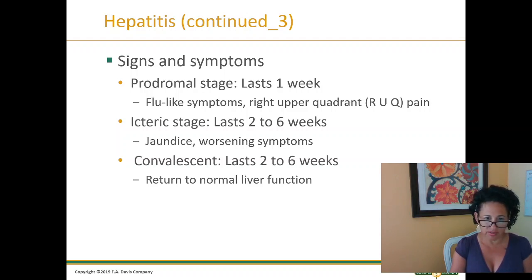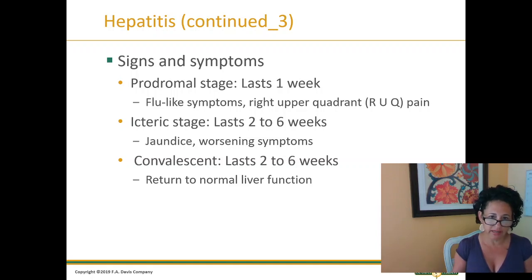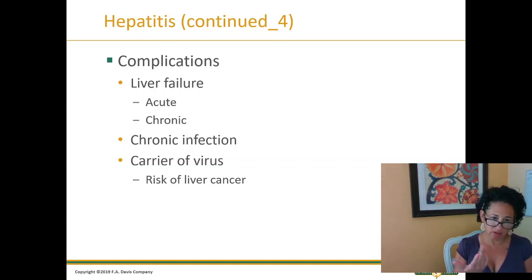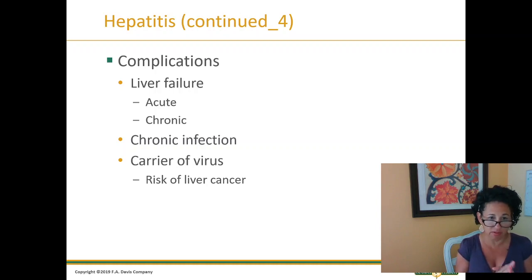The icteric stage lasts two to six weeks with jaundice and worsening of symptoms, then the convalescent phase. Starting with a prodromal stage through to convalescent — that's the signs and symptoms path it takes. Complications include liver failure, both acute and chronic, chronic infection, and carrier virus status.